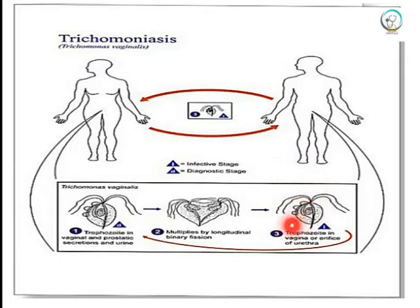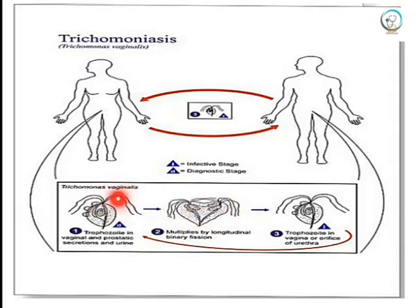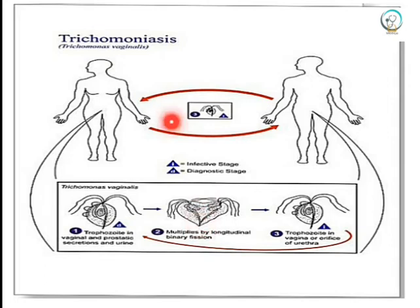Trophozoites are found in the vagina or orifice of the urethra and divide by longitudinal binary fission. Trophozoites in vaginal and prostatic secretions represent both the diagnostic stage and the infective stage. During intercourse, transmission occurs from male to female or female to male.